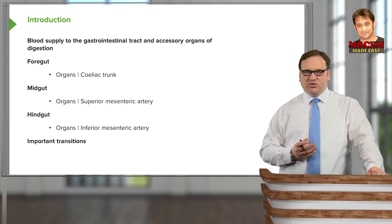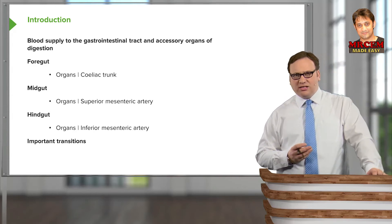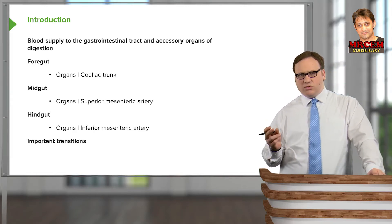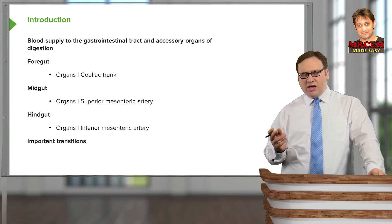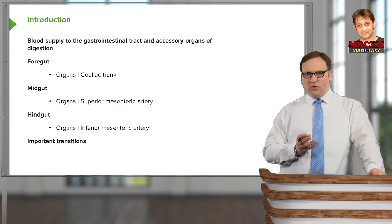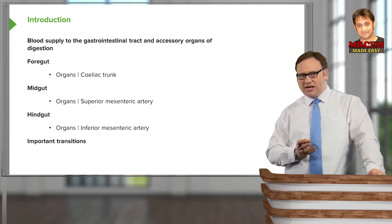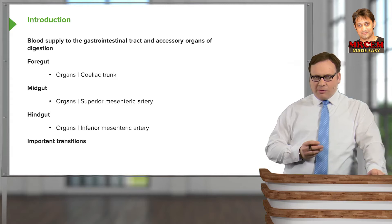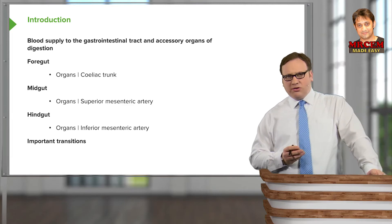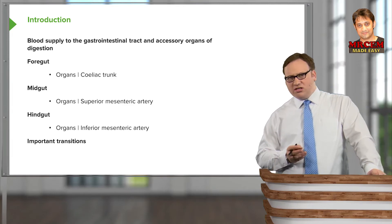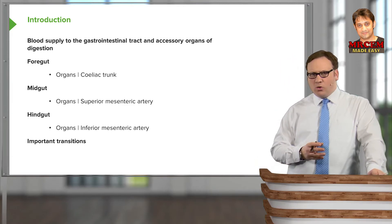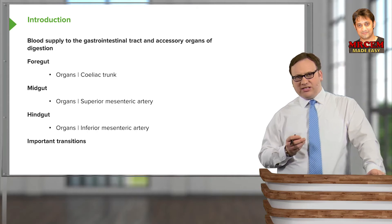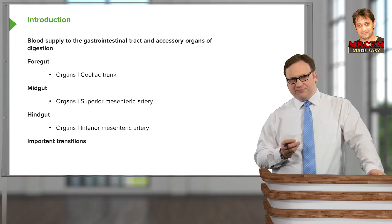We need to imagine the gastrointestinal tract as one long, continuous tube, and we can divide it into foregut, midgut, and hindgut. We're going to look at the organs that make up the foregut and explain how they're supplied by the celiac trunk.